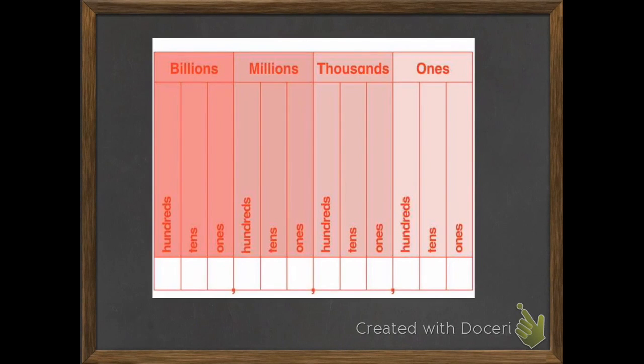Here's a place value chart. At the top, you'll see the periods. We have ones, thousands, millions, and billions.